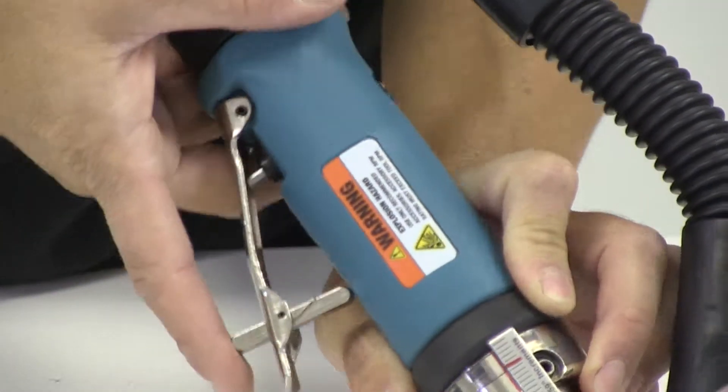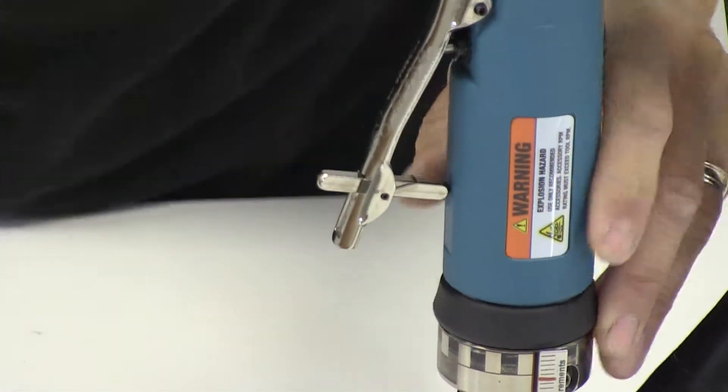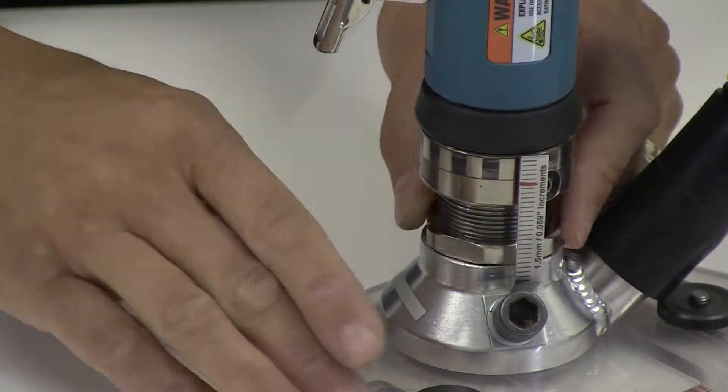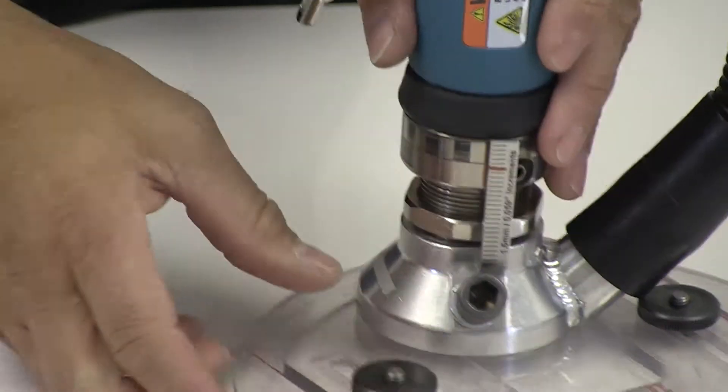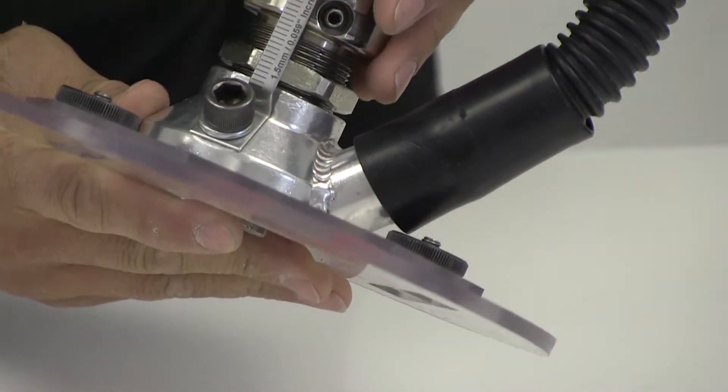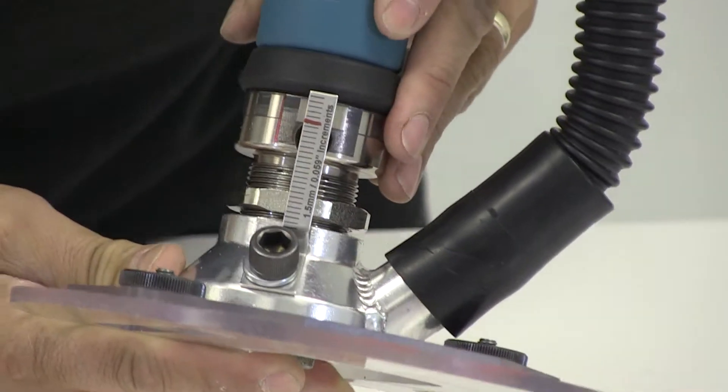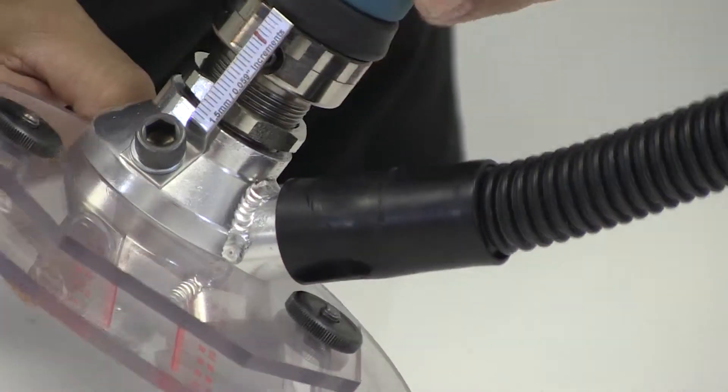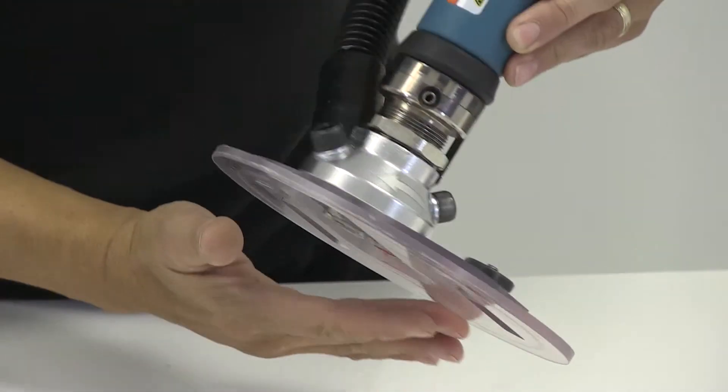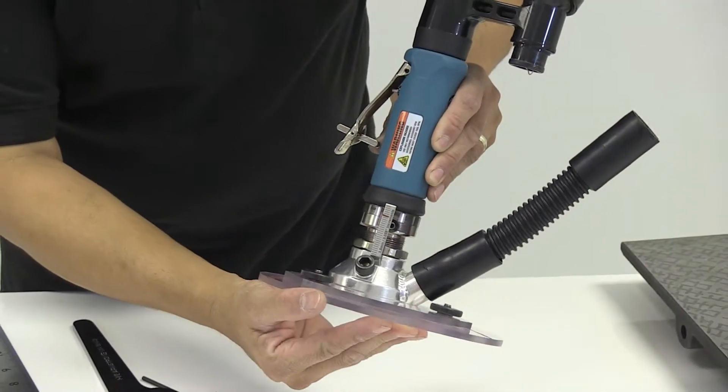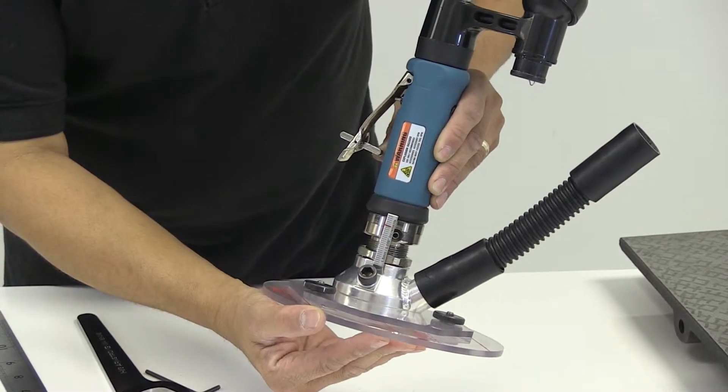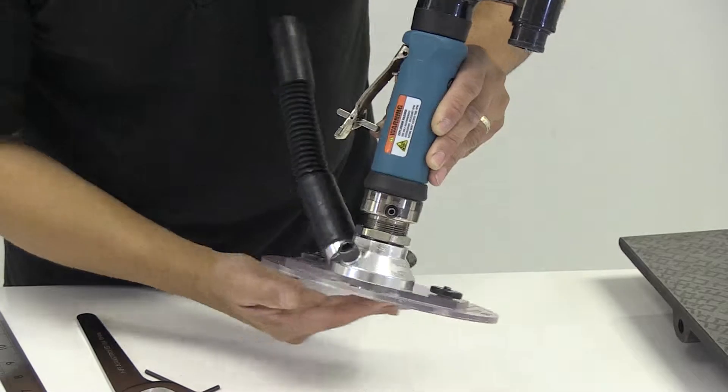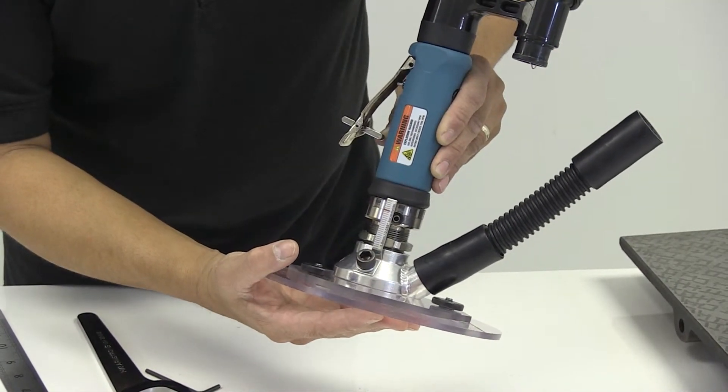With the two marks in place, we can adjust our router in relation to the body of the router. For every full turn, it's 1.5 millimeters or 0.59 inches. We can also take it back to our zero position accurately.